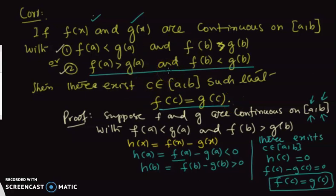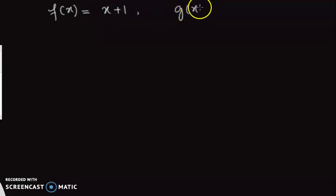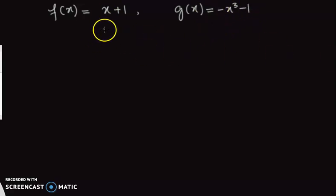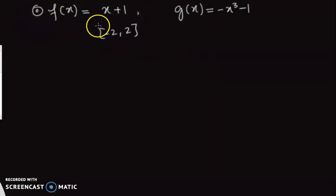This is basically the intersection of two graphs — it ensures the existence of an intersection point. Now let's do an example. Let f(x) = x + 1 and g(x) = −x³ − 1, and we are given the interval [−2, 2]. We can check whether f and g are intersecting on this interval.